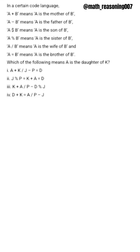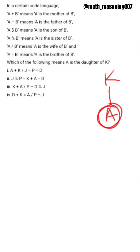Hi guys. Which of the following means A is daughter of K? So A is female, A is daughter of K. If I put a circle, then it is female. If I put a square or box, then it is male. So we need to find the code which shows the relation as A is daughter of K.